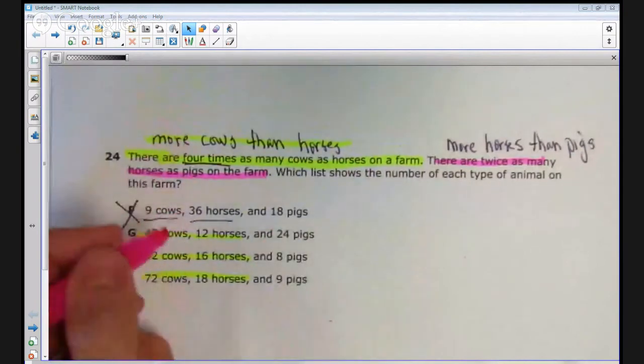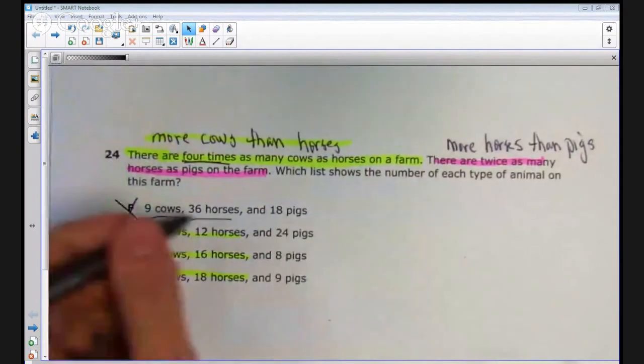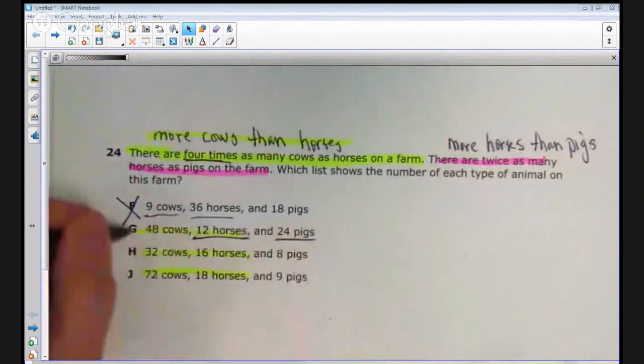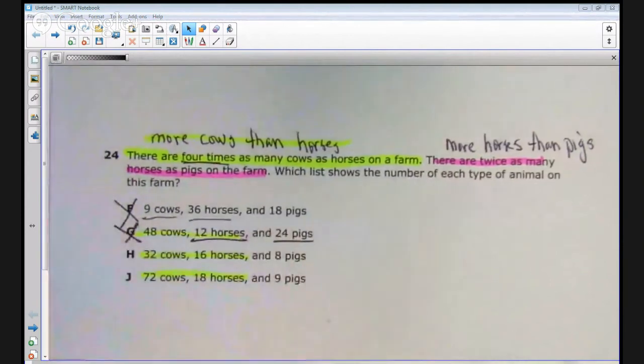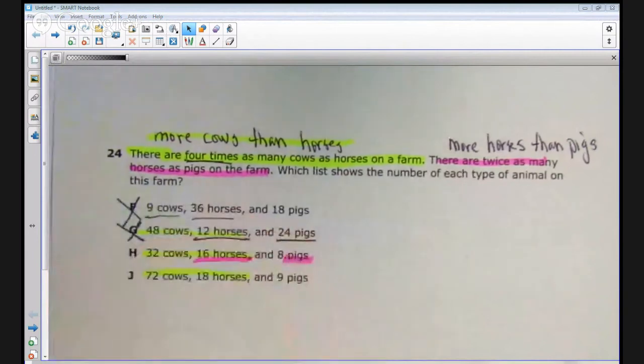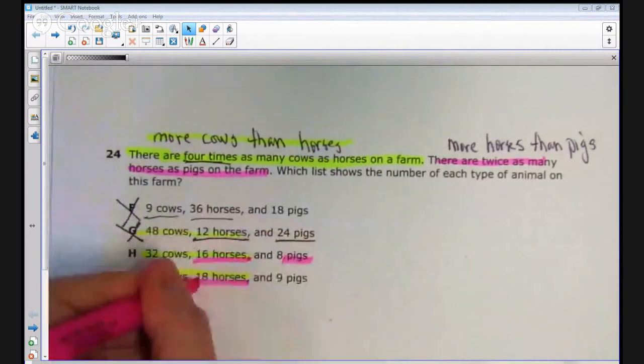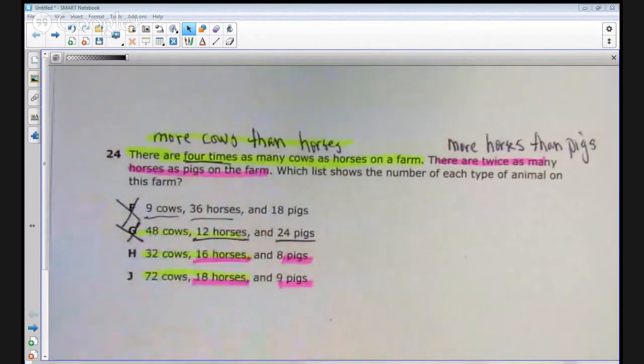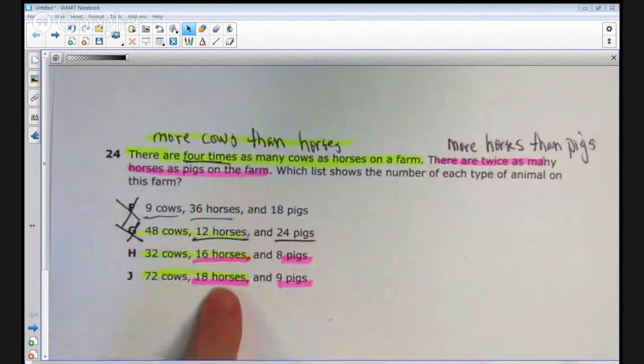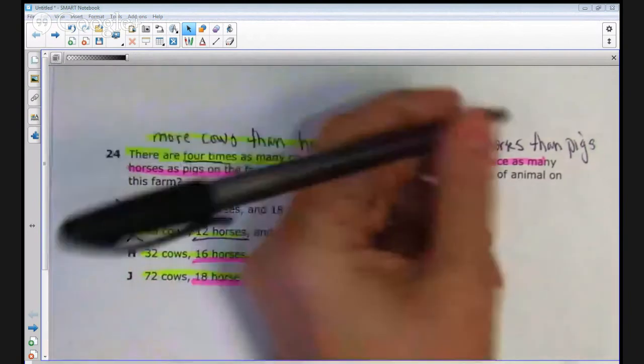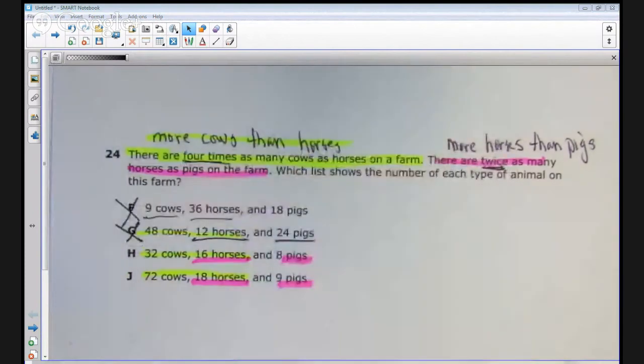Well, there are not more horses than pigs in answer choice G. There are actually less. There are more horses than pigs in H. And there are more horses than pigs in J. And not only that, but there are twice as many for both of those. So we have narrowed it down.